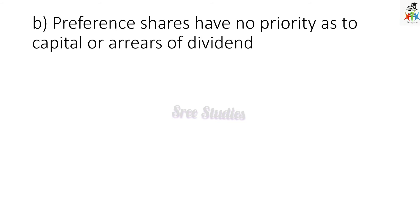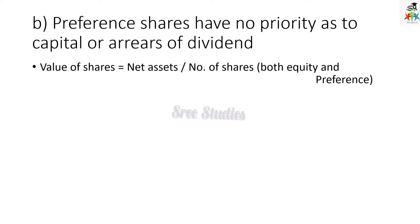Second option: preference shares have no priority as to capital or arrears of dividend. Here, preference shares do not have any priority over capital or arrears of dividend, so we take both equity as well as preference shares together. Net asset is divided among both equity and preference shares — 30,000 equity shares plus 10,000 preference shares. The value of share is Rs. 9.28.